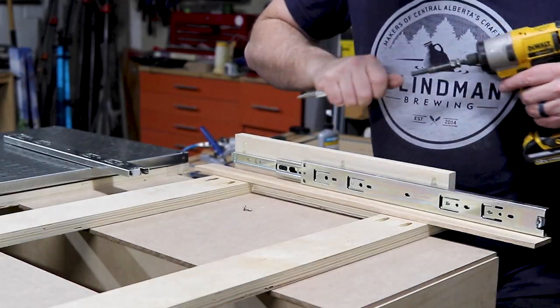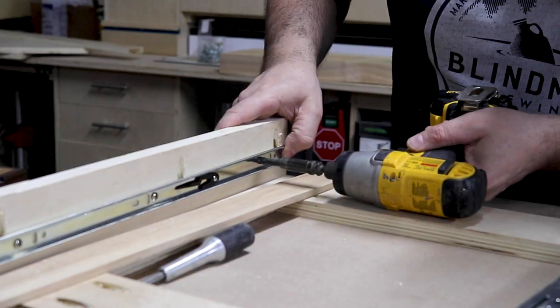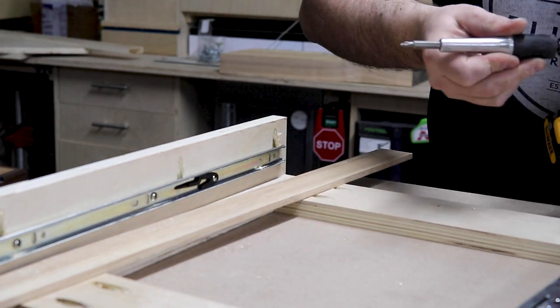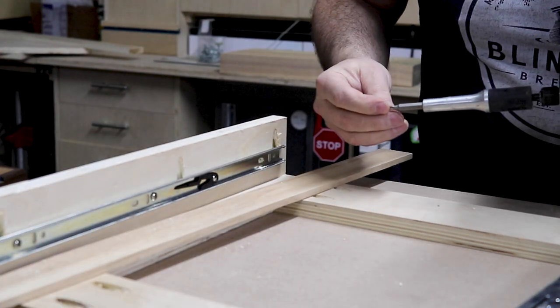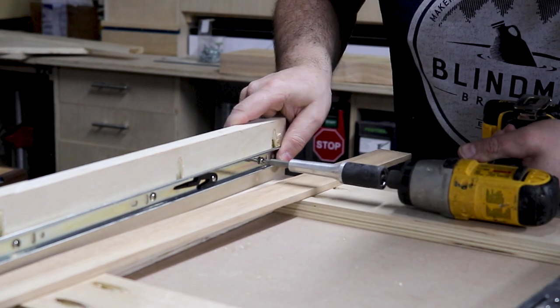I hope this isn't confusing, but I mounted the section of the drawer slide that would typically go on to a drawer box onto the sliding panel, and the section of the drawer slide you would typically mount on the inside face of a cabinet on the outside face of this cabinet. Makes sense?